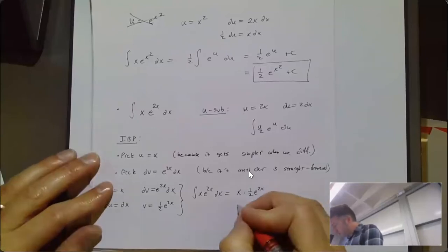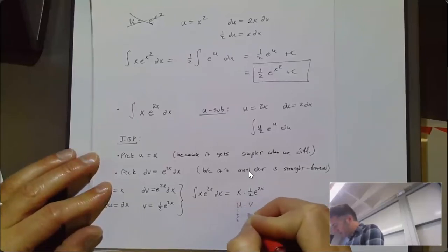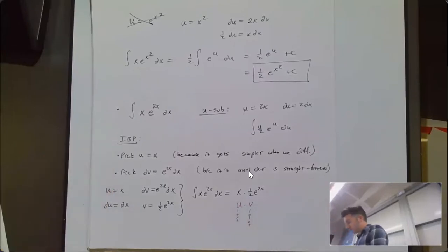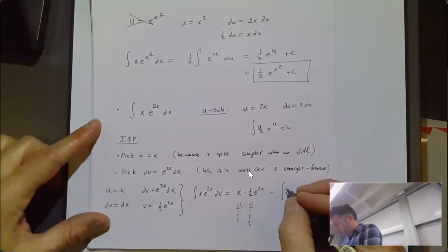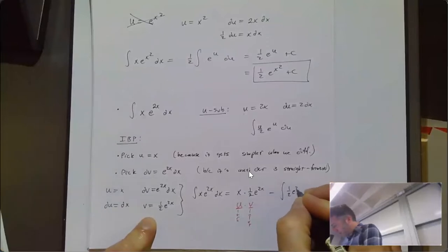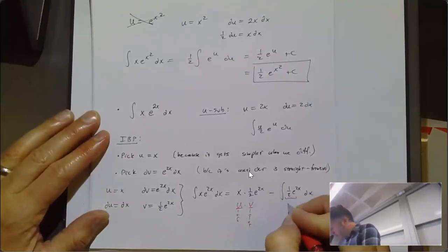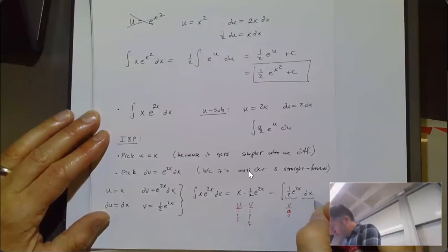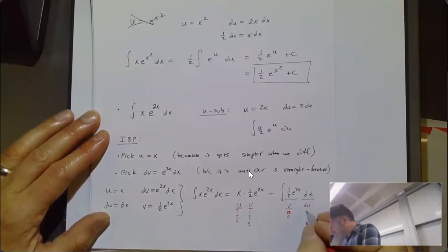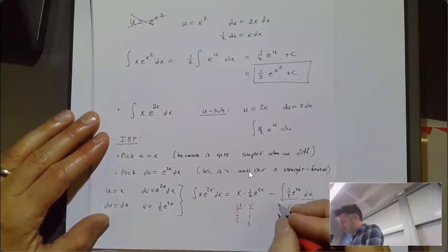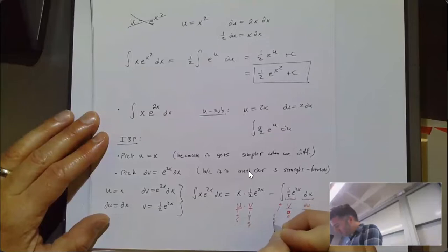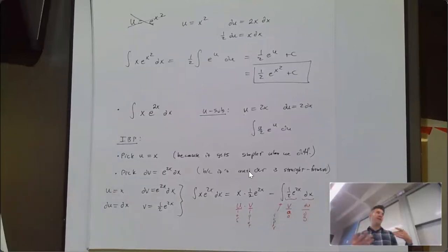So that's uv minus the integral of v du. It's the acronym 'ultraviolet voodoo' — uv minus the integral of v du. You don't have to use that, but I find it convenient.